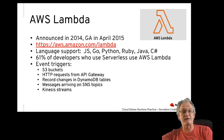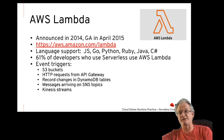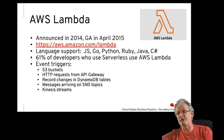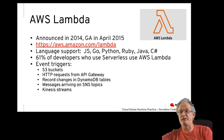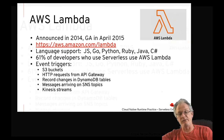One of the key strengths of AWS Lambda is how it seamlessly integrates with other AWS services — specifically the ability to trigger a Lambda function from events such as S3, DynamoDB, Kinesis, SNS, and API Gateway requests.